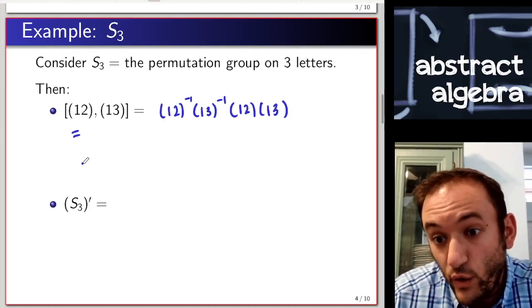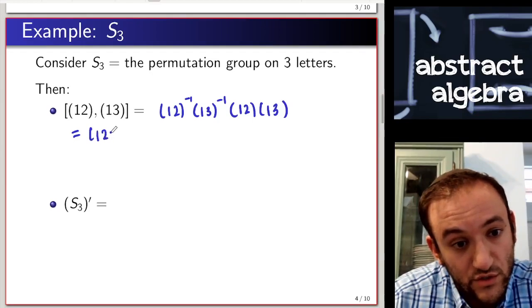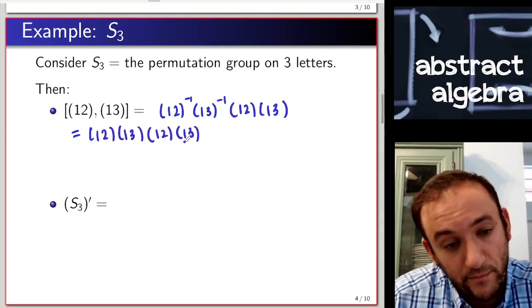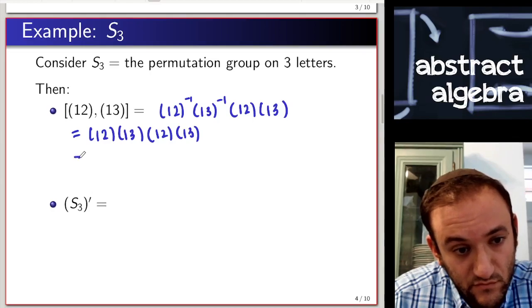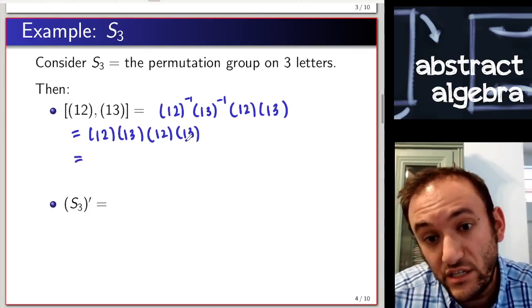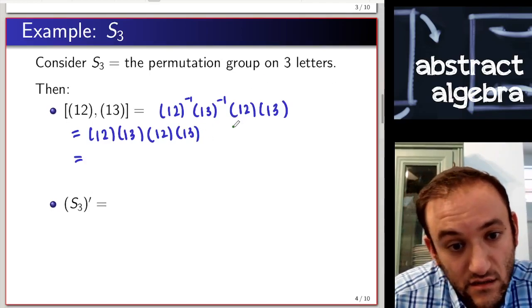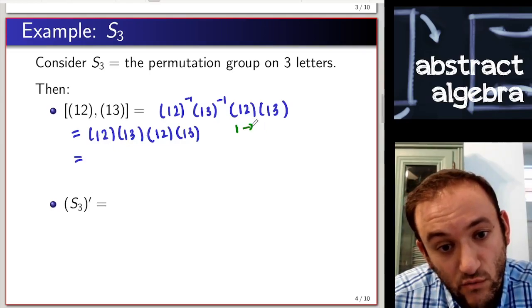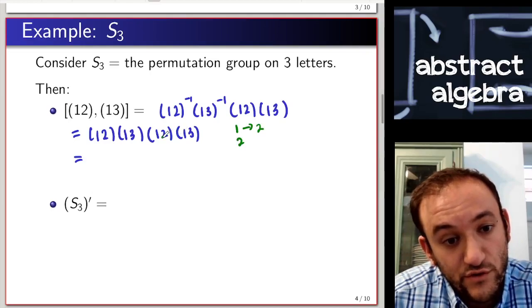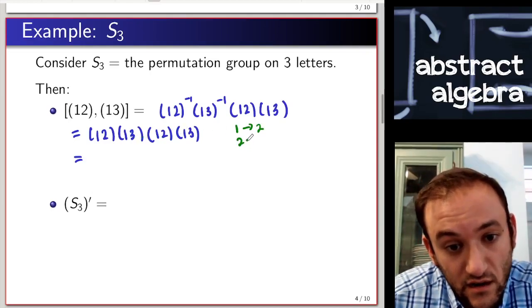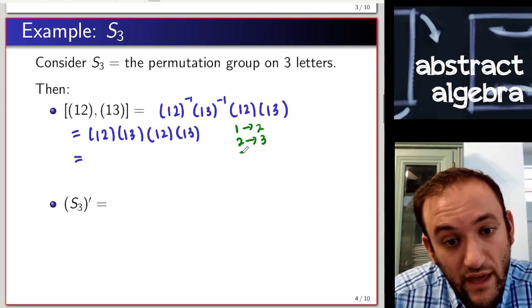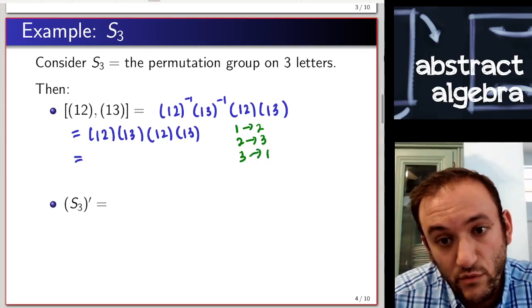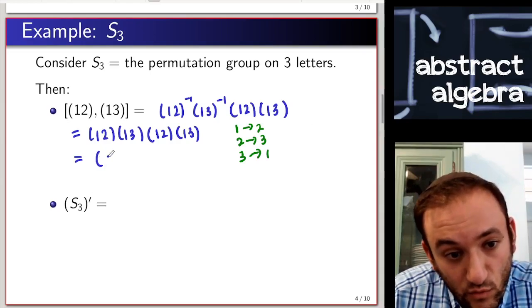Transpositions are their own inverses, so we can replace this with (1 2)(1 3)(1 2)(1 3). Looking at how this function acts on each element: one first goes to three, then back to one, followed by two — so one goes to two. Two first goes to one, then goes to three, and stays there. Three goes to one, then two, then one.